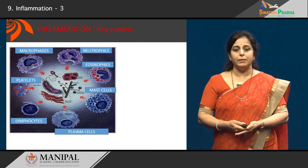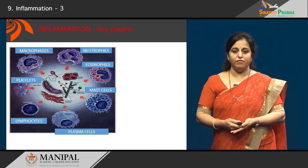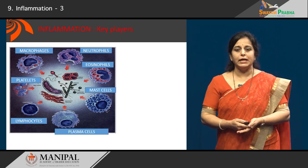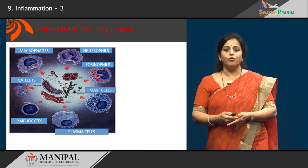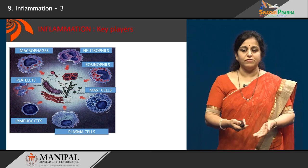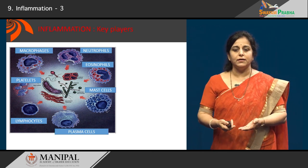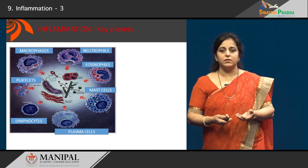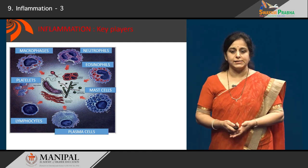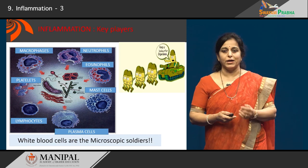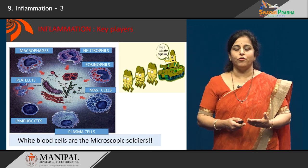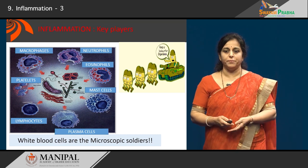These are the key players that play a role in inflammation. You can see all the different kinds of WBCs that play a role in fighting against any injurious agent — bacteria, viruses, necrotic tissue, foreign bodies, etc. So they are our microscopic soldiers, ready to fight against anything foreign that gains entry into our body.